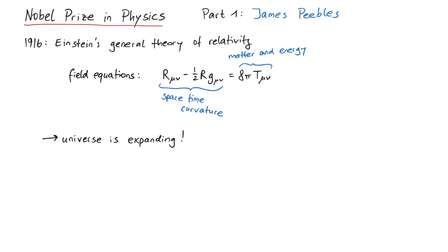Since this contradicted the common knowledge at that time, he manually added a constant term to his equations, the famous cosmological constant, which acted as a counterbalance. After solving the new equations, the conclusion was that the universe stood still.